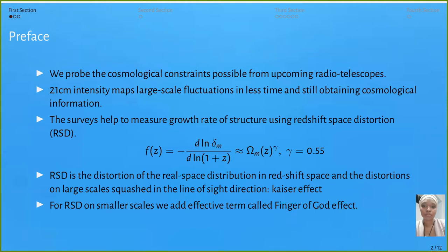We measure the growth rate of structure, given by variable f, parametrized by omega_m^gamma. Because we use information from lambda CDM and standard dark energy models, we use a constant gamma of 0.55. This growth rate provides a powerful consistency test of general relativity and modified gravity.